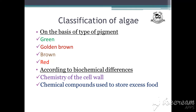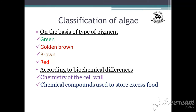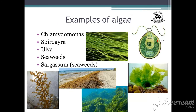According to biochemical differences, algae may have different cell wall compositions, or the chemical compounds used to store excess food may be present in different quantities. So algae are classified in these two ways.